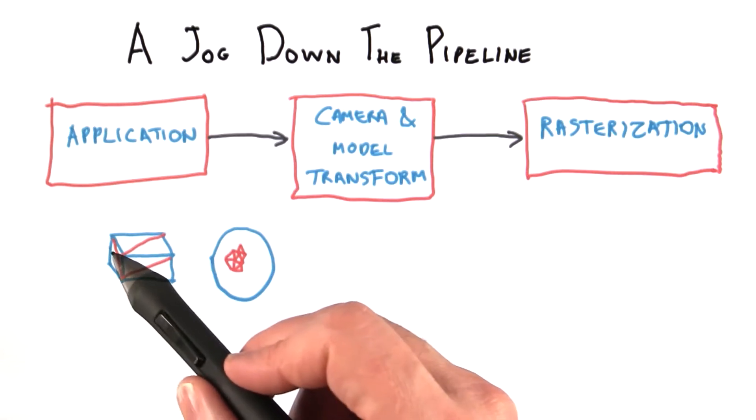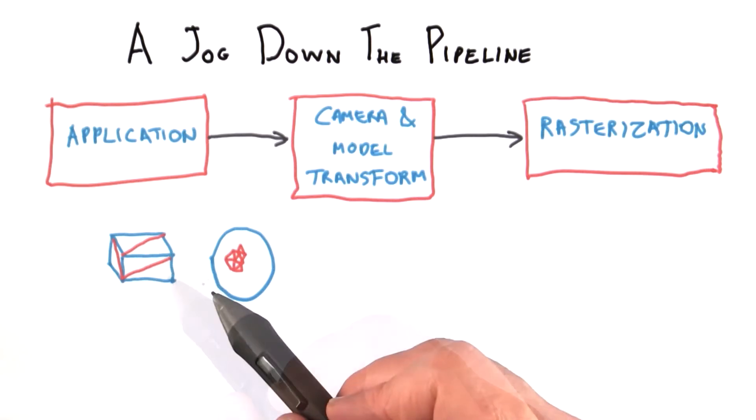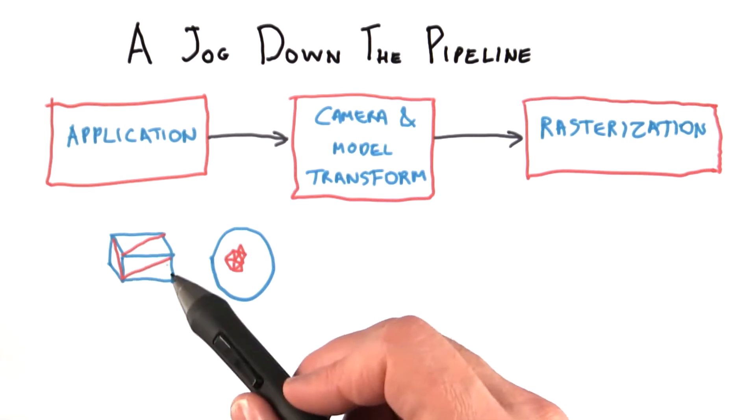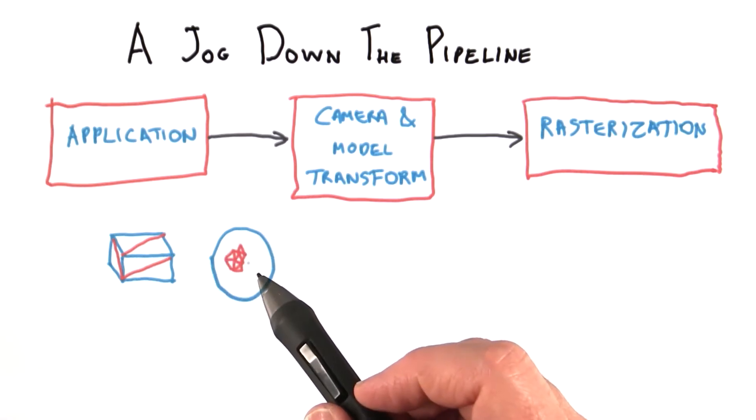The first step is simply that the application sends objects to the GPU. What objects? Typically, 3D triangles. Each triangle is defined by the locations of its three points. An application converts a cube into just a few triangles. A sphere gets turned into a bunch of triangles. So in the first step, the application decides what triangles to send down the pipeline.